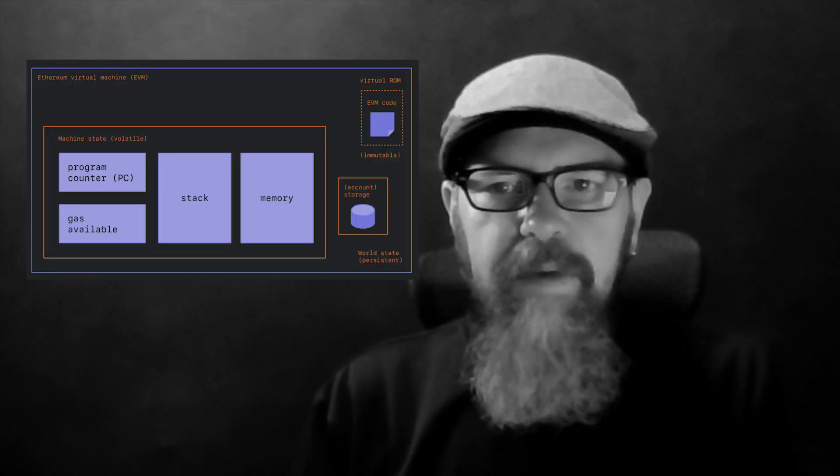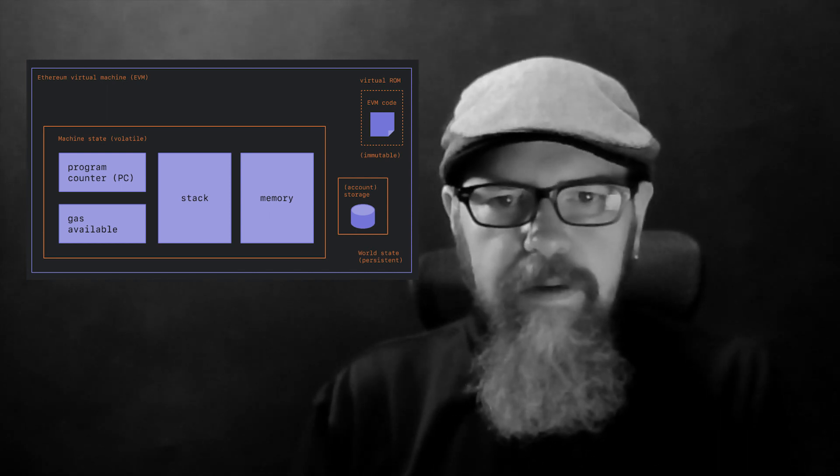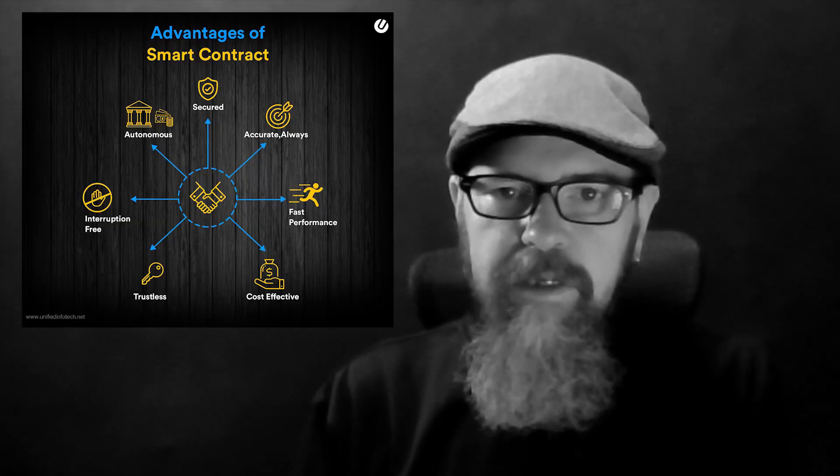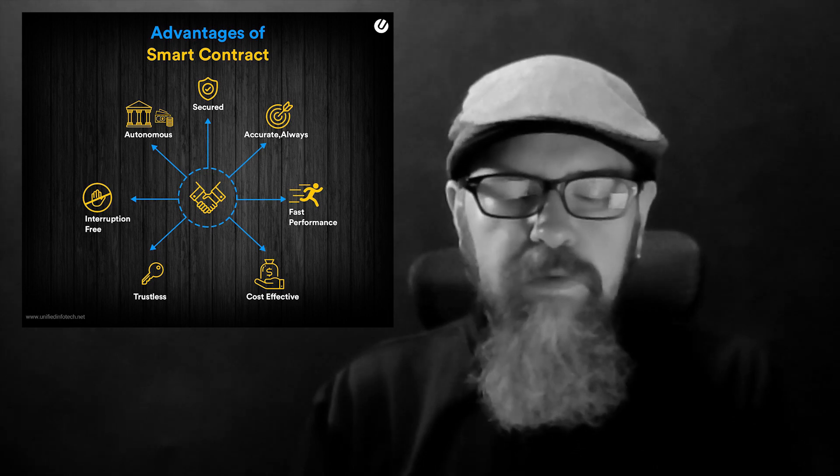I'm sure everyone knows what an EVM is. In simple terms, you can think of the EVM as a virtual machine that exists on the Ethereum network. It allows developers to write and deploy smart contracts, which are self-executing agreements with predefined rules and conditions. To keep it simple, let's say I promise to give my child an allowance of $10 a month for one year, no matter what.